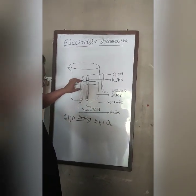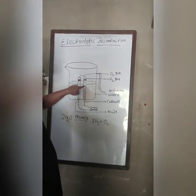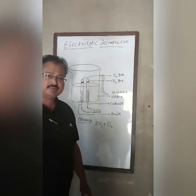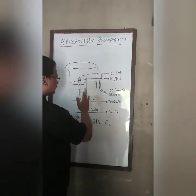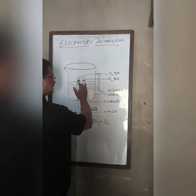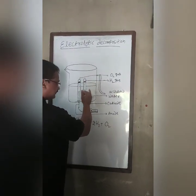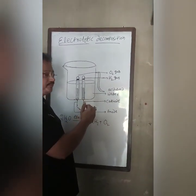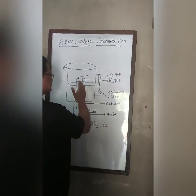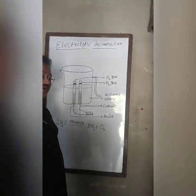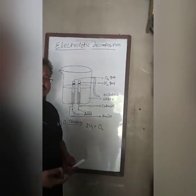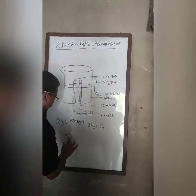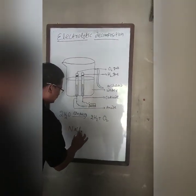You may also ask why the test tubes are filled with water. This is because when bubbles start evolving, they displace the water downward and the gas gets collected at the top. Similar examples can be taken for the electrolytic decomposition of molten sodium chloride.